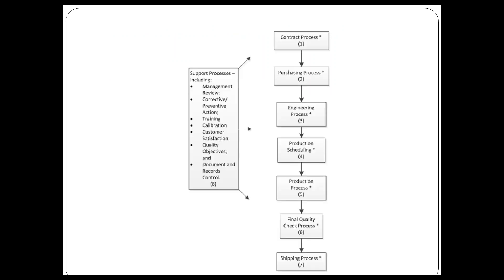Here's our first example. On the left-hand side we've got another catch-all for the support processes, and again the idea is that this item provides support to the entire quality management system. Then we have a top-down flow. This is a very typical set of processes — the whole idea that it begins with contracts and finishes with shipping. This is absolutely an acceptable interaction of processes representation.